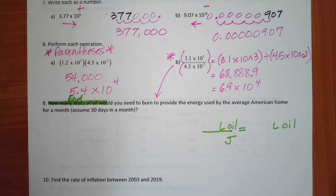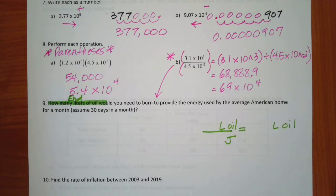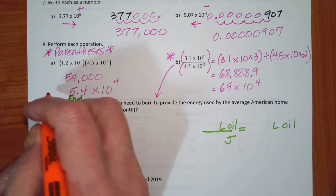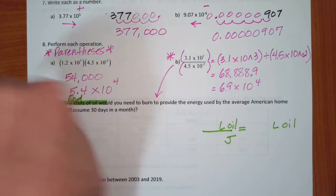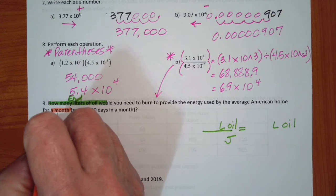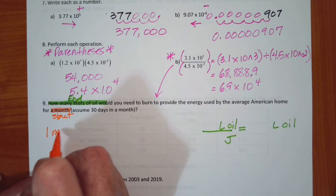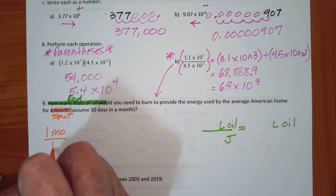Where am I going to start for my starting units? It is not going to be in joules — it's going to be a time unit. The problem says 'to provide the energy used by the average American home for a month.' Those are my beginning units, this is where I start. So I'm going to have one month divided by one.